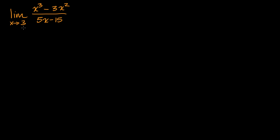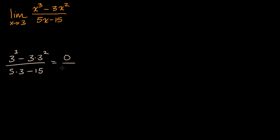One thing you might want to try is: what happens to this expression when x is equal to three? It's going to be three to the third power minus three times three squared over five times three minus 15. In the numerator you have 27 minus 27, and in the denominator 15 minus 15 — zero over zero. So this expression is not defined at x equals three. We get this indeterminate form, zero over zero.